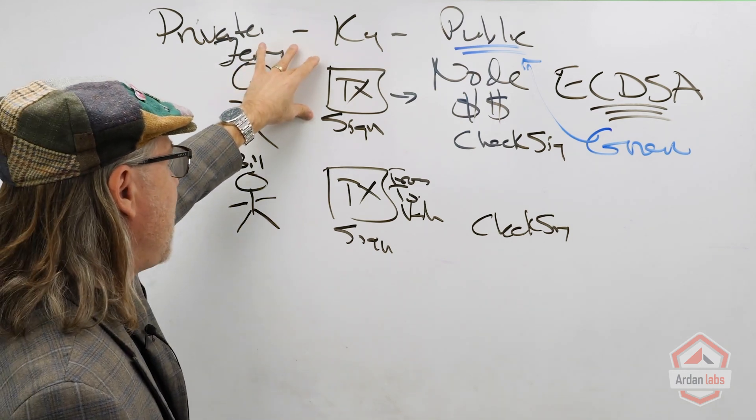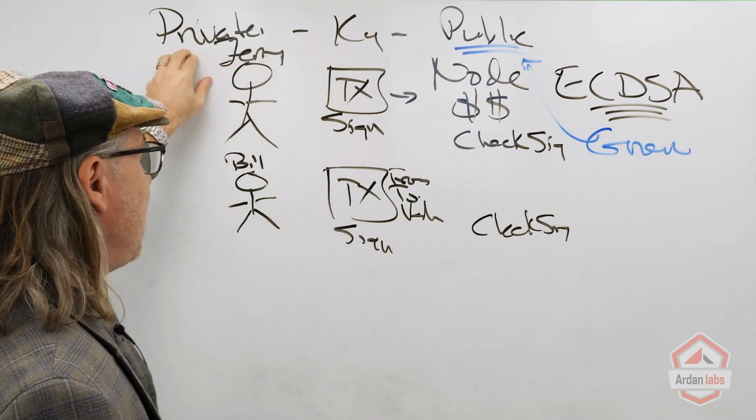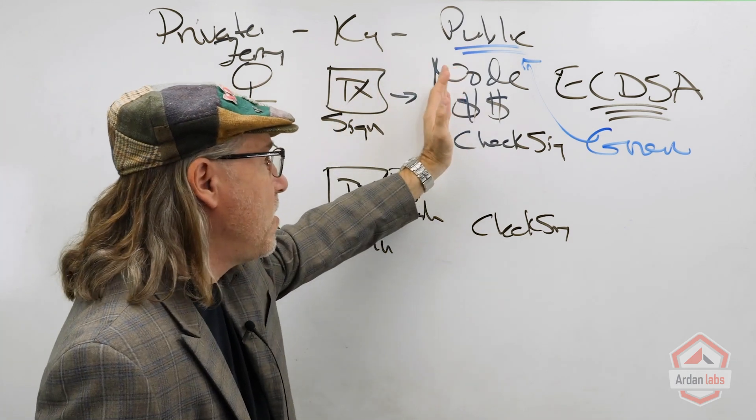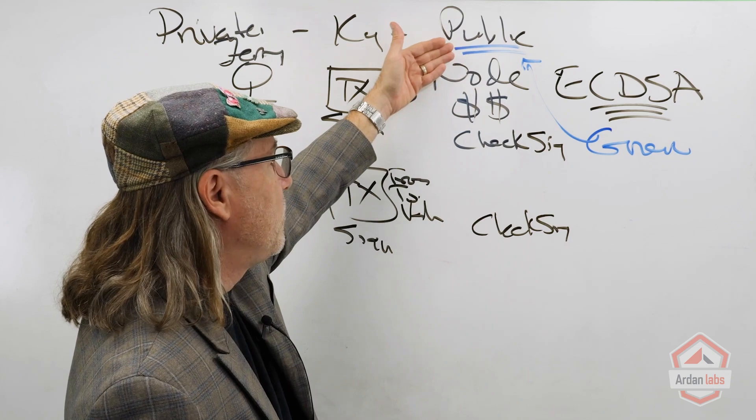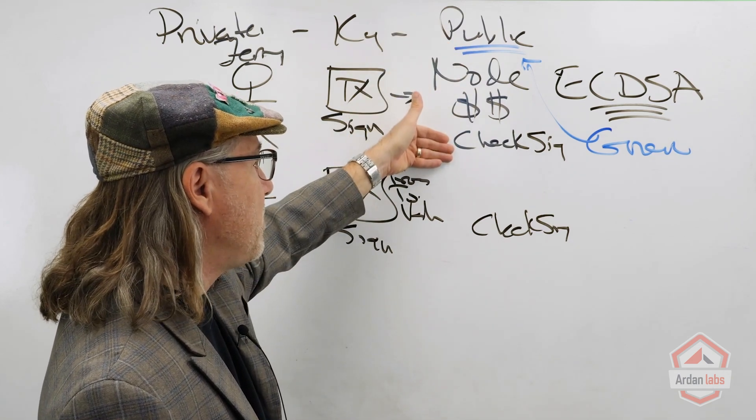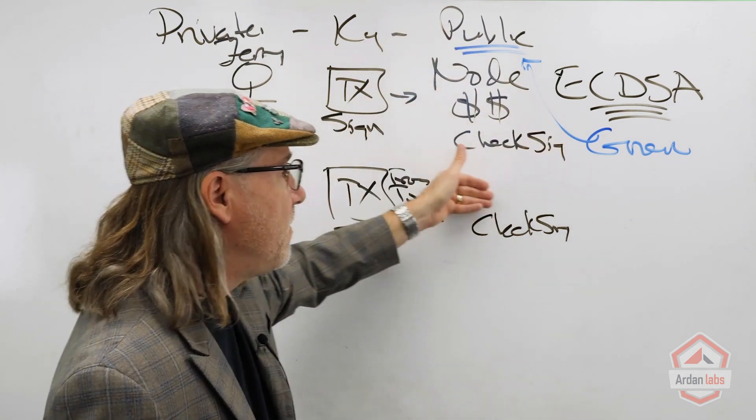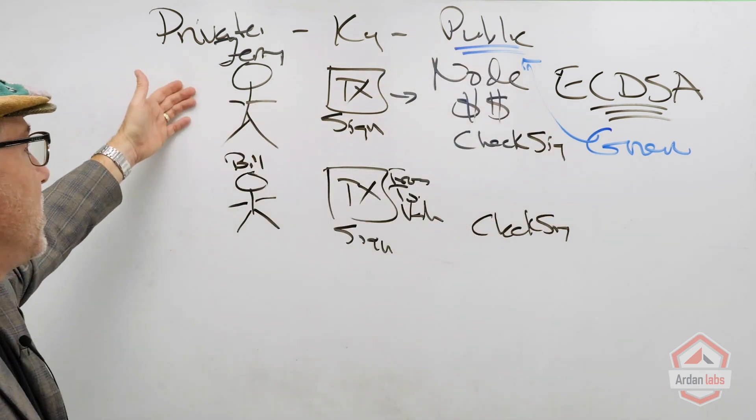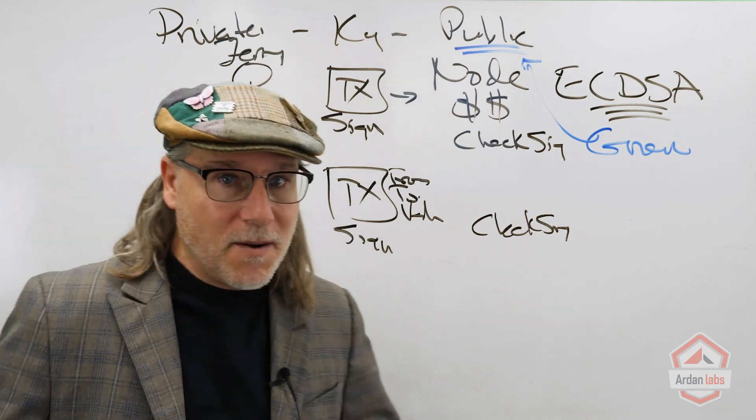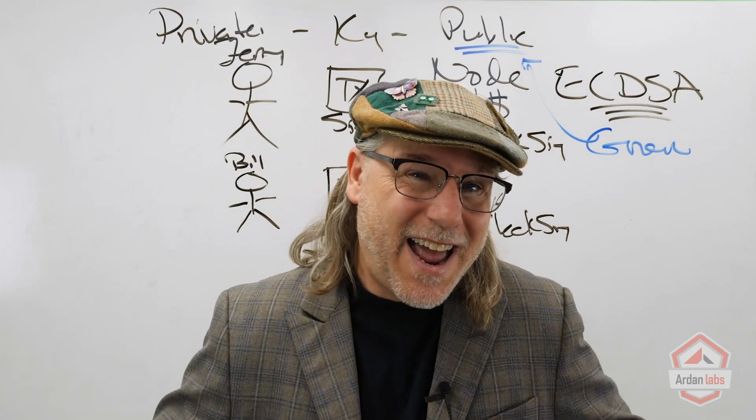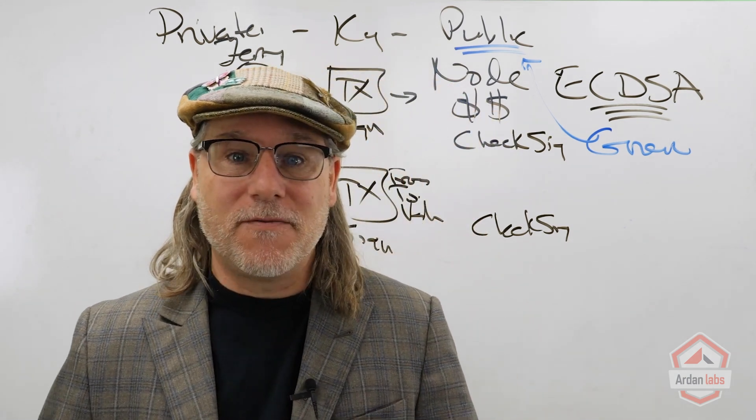We're going to build mechanics so based on the transaction data we can sign it with the private key, send it over, and then the node is going to be able to extract the public key from that. Then we're going to be able to check that signature and validate this absolutely came from Jerry, this absolutely came from Bill, and we shouldn't have anybody hacking or stealing money from anybody.